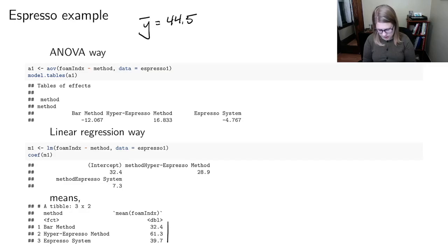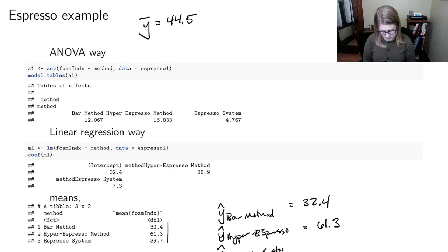And so maybe we'll start at the bottom and work our way up. So if we were going to use the very simple basic means way, I would say Y hat for bar method is going to be equal to 32.4. Y hat for hyper espresso is 61.3. And Y hat for espresso system is 39.7.